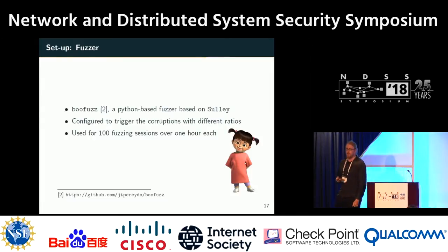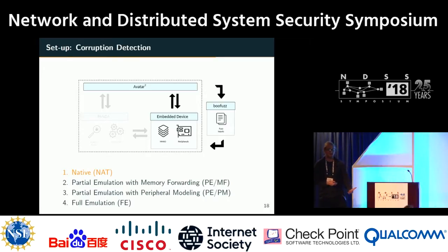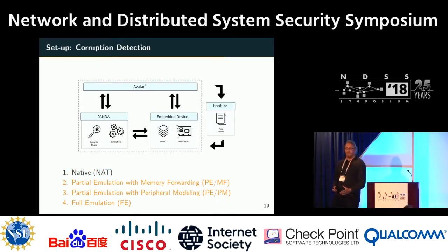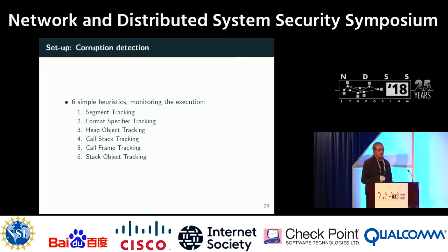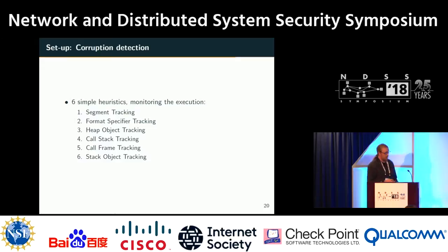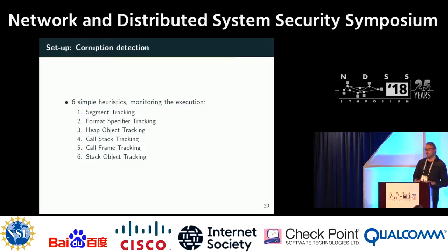In the native case, the only available fault-detection mechanism is the basic liveness check. But once PANDA is in the loop, we can define several analyzer plugins to aid fault detection. We implemented six simple heuristics mimicking techniques already present in the desktop world, implemented as passive monitors during execution — no instrumentation of the actual binary is performed. Using a subset of these heuristics, we were able to successfully detect the different kinds of vulnerabilities we inserted, whereas using only liveness checks, around 50 to 60 percent of corruptions went undetected.